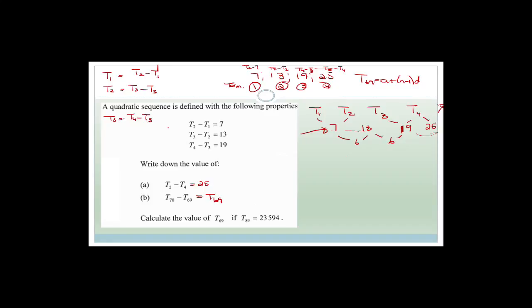So what we were doing yesterday: a quadratic sequence is defined by the following properties. T2 minus T1 was 7, T3 minus T2 was 13, T4 minus T3 was 19. They asked what is the value of T5 minus T4. If you look at this, the second difference is 6, 6 — so therefore this would be 6 as well. So 19 plus 6 is 25. Therefore T5 minus T4 is going to be 25.